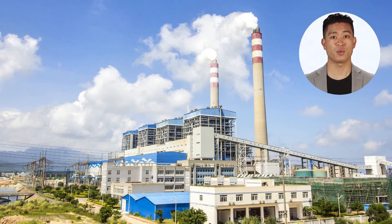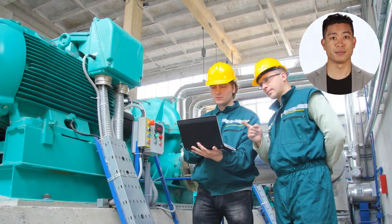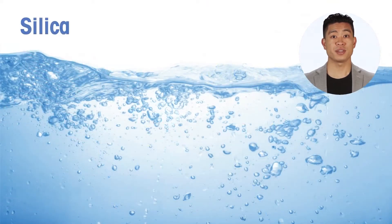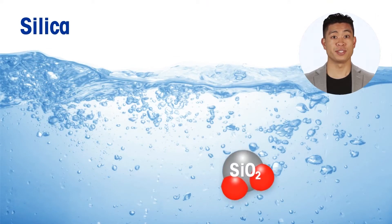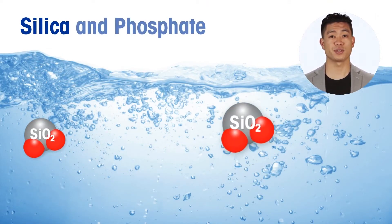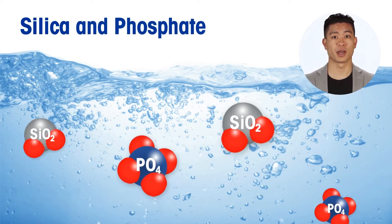Power plants invest a lot of effort monitoring water and steam throughout the plant to help prevent corrosion and maximize power generation efficiency. Two critical focus areas include monitoring for silica contamination to minimize deposition on critical plant assets and, where used, measuring phosphate to ensure proper dosage in drum-type boilers.